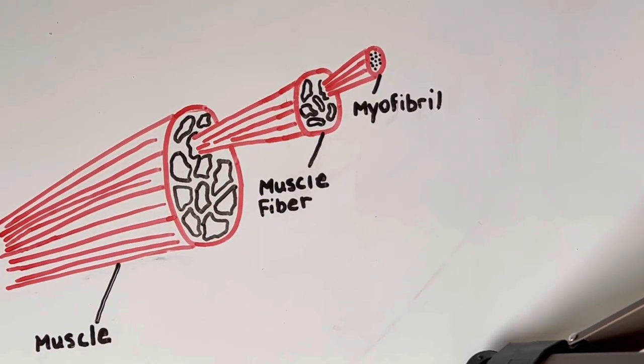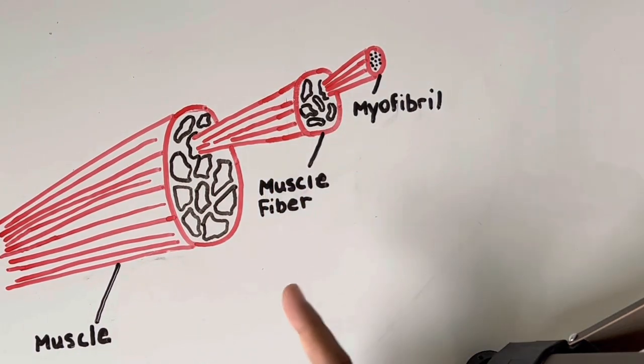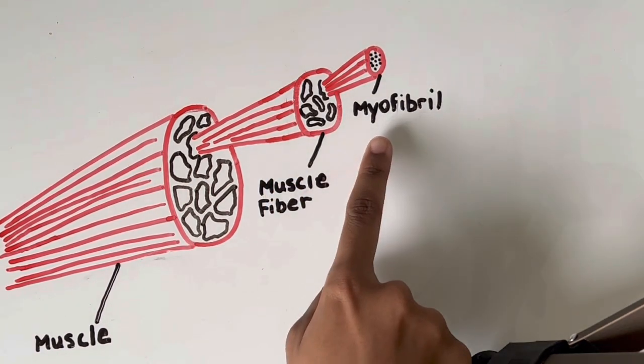I like to think of a muscle like a telescope. A telescope has smaller and smaller cascading tubes. In the same way, a muscle contains smaller tubes called muscle fibers, and every muscle fiber is made up of even smaller tubes called myofibrils.